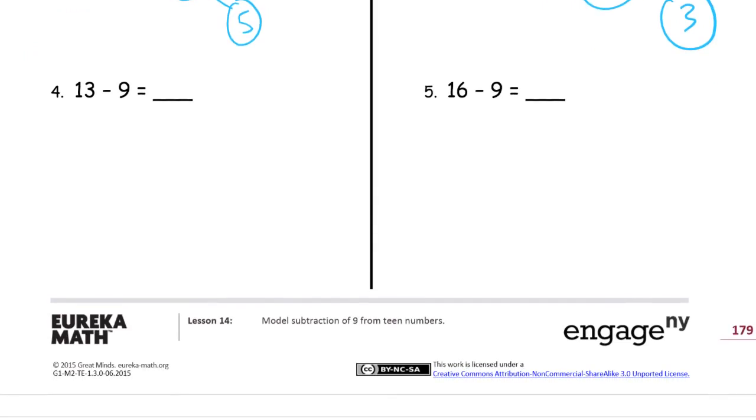13 minus 9. 1, 2, 3, 4, 5, 6, 7, 8, 9, 10, 11, 12, 13. Circling the 10.